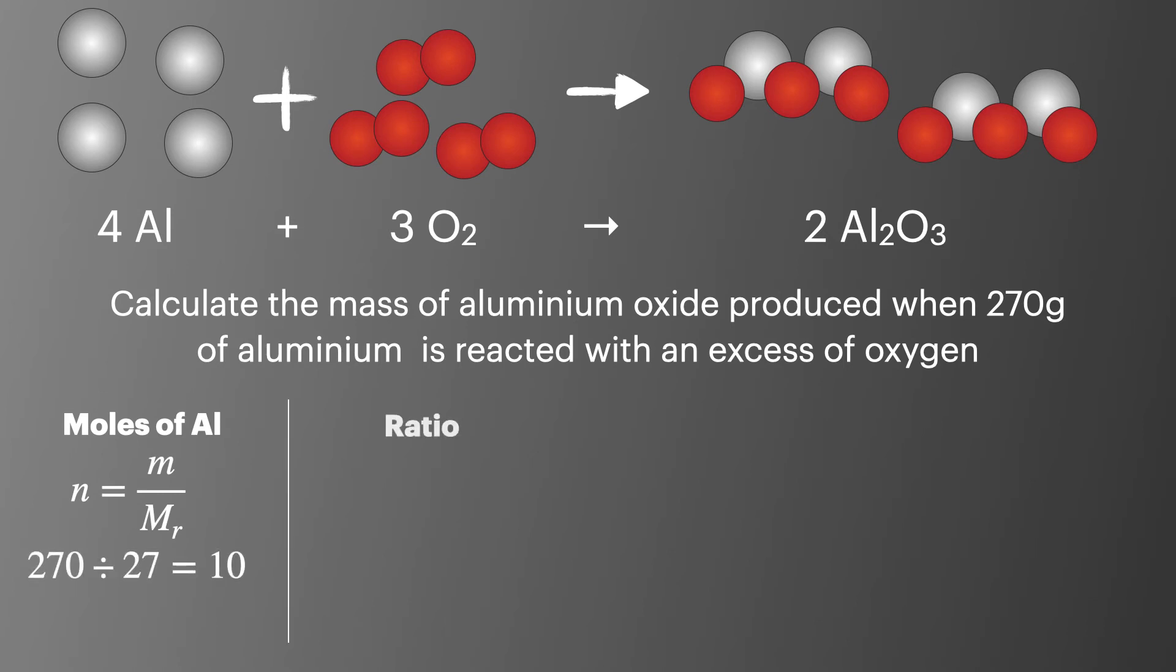We then need to work out the ratio of aluminum to aluminum oxide. In this case it's 4 to 2. Using this ratio, we can work out the moles of aluminum oxide. The simplest way to do this is to divide the number of moles of aluminum by 4 and then multiply it by 2. This leaves us with 5 moles of aluminum oxide.